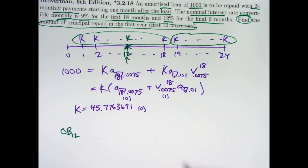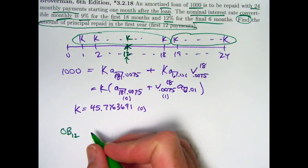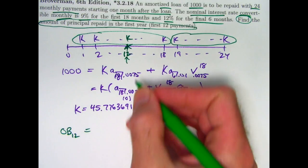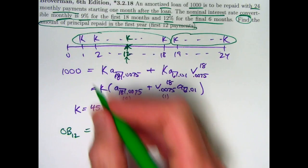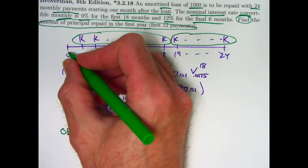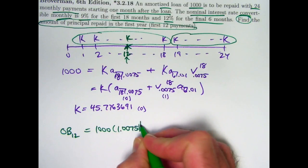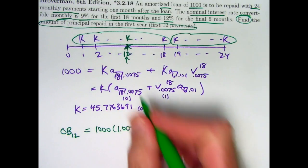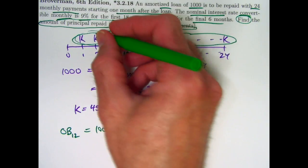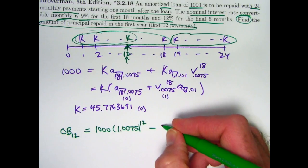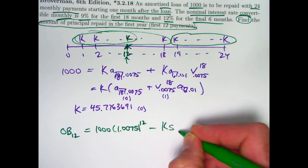So what is the outstanding balance at month 12? We've got time, I think here. We can probably solve this with both the retrospective and prospective methods to see that we get the same thing. The retrospective method looks back in time. It takes the loan amount, $1,000, at time 0 and promotes it to time 12 by multiplying by 1.0075 to the 12th power, and subtracts off the future value at time 12 of these first 12 payments here. That would be K times s-angle-12 at 0.0075.